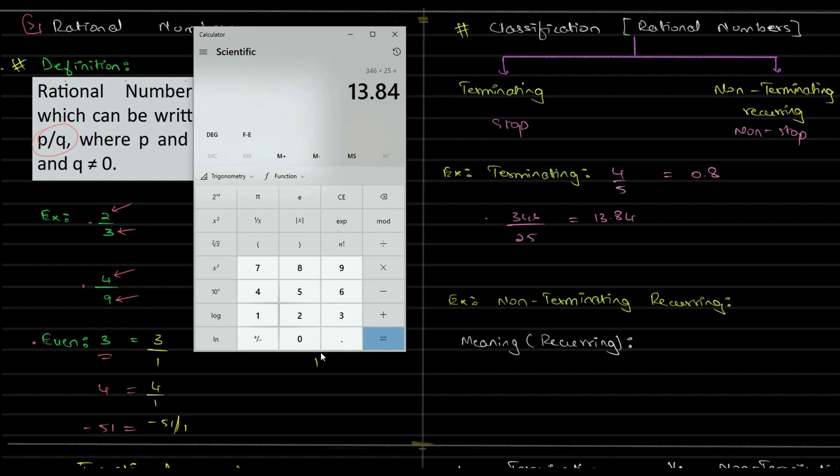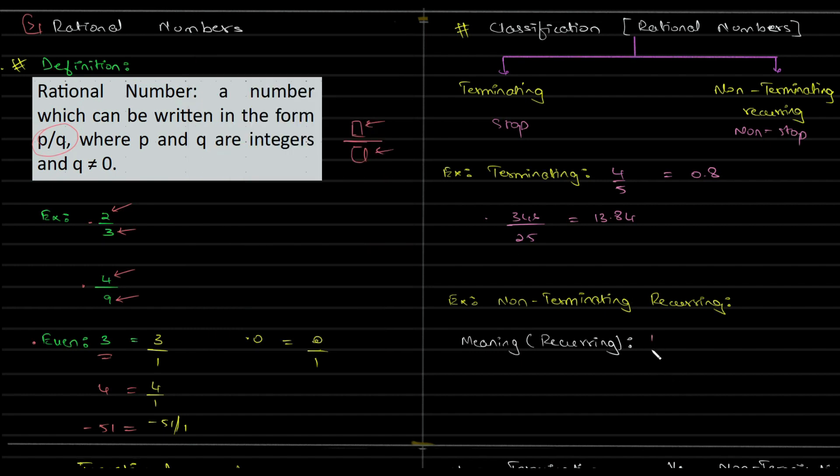Now I will take some very basic number which is not an example of terminating. 1 divided by 3. Can you do it on paper? 1 divided by 3, what will it give you? 0.33333. That is a lot of numbers. 1 divided by 3 gives you 0.33333. It will never end.